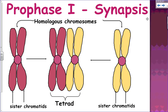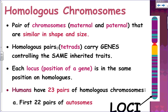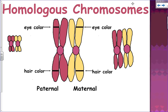Homologous chromosomes are paired chromosomes — one maternal and one paternal, one from mom and one from dad. They're similar in shape and size and carry genes controlling the same inherited traits. Each locus — the position of a gene — is in the same position on a homolog. Humans have 23 pairs of homologous chromosomes: the first 22 pairs are autosomes, and the last pair are the sex chromosomes.